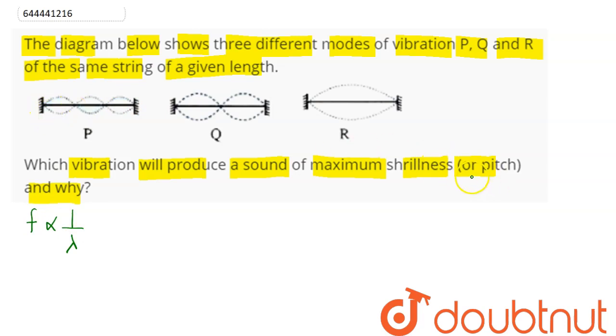Now we can say that pitch or shrillness will be maximum where lambda will be minimum. So we calculate lambda in these three cases.